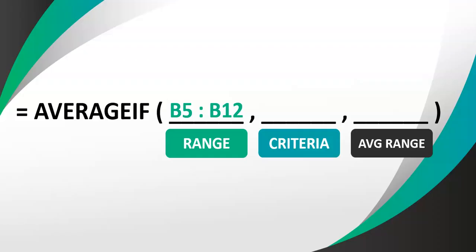For example, let's say we look through B5 to B12, which is a range of ages, and we want a criteria of greater than or equal to 50. So B5 to B12 is a range of ages, and we look for any age that's greater than or equal to 50. Then the average range is D5 to D12 — a range of salaries. This formula would find the average salary of all those who have an age of 50 or more.